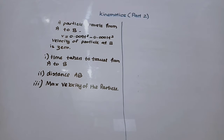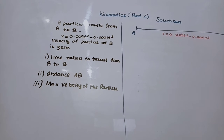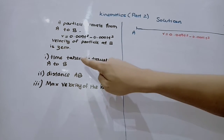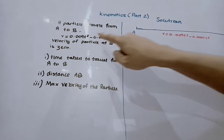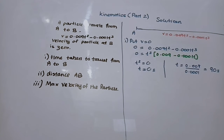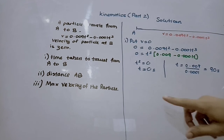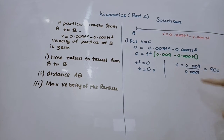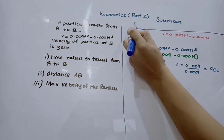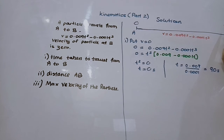For part 1, we use the fact that the velocity of the particle at B is 0. We put v = 0 in the expression and find time t for the whole journey from A to B. This gives t = 0 seconds and t = 0.009 ÷ 0.0001 = 90 seconds. So the particle starts at t = 0 and ends at t = 90 seconds. This is our answer to part 1.